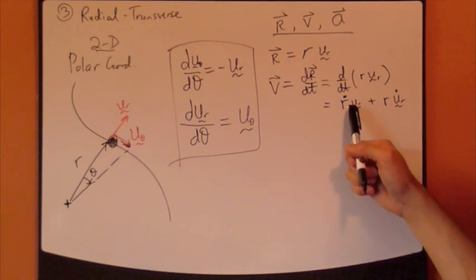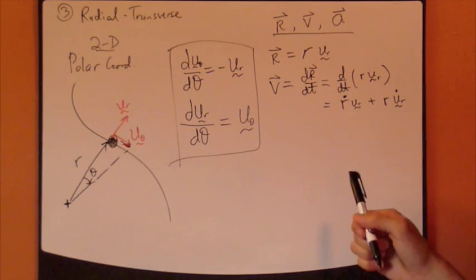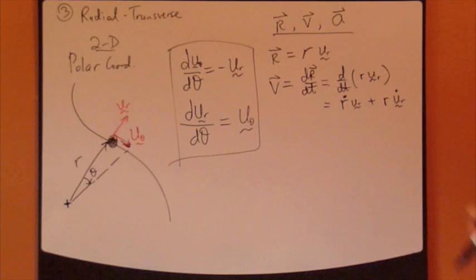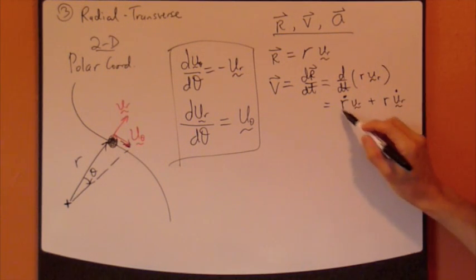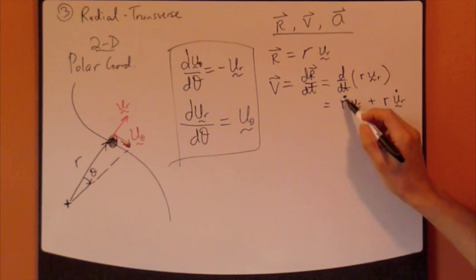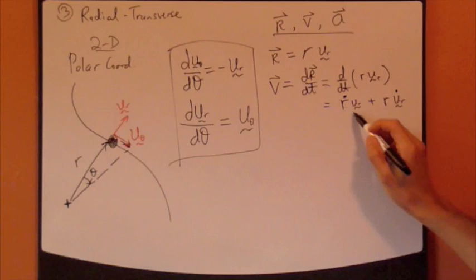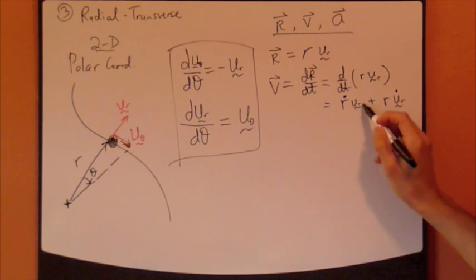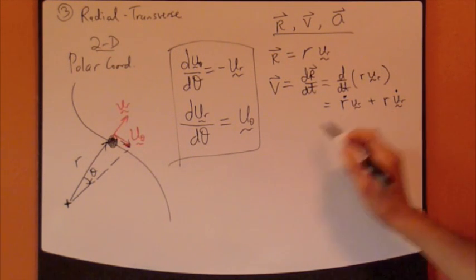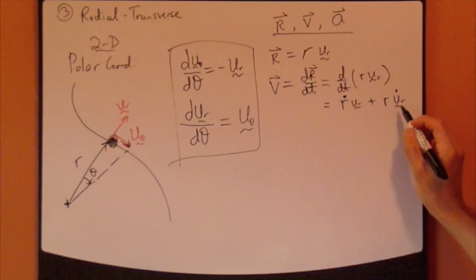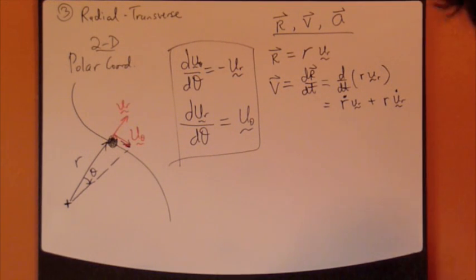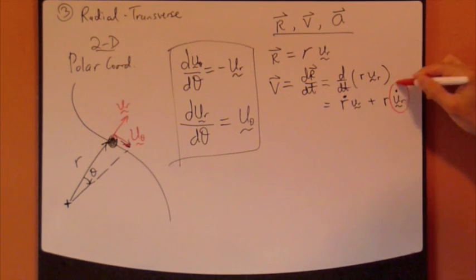Recall that r_dot means dr/dt. So this first term is OK because this is just simply dr/dt and this is already in the r direction, the u_r direction. So that's fine. The second term r, what is this guy right here?